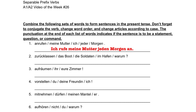In the next one, we have a question starting with Warum — why. We have the separable prefix verb zurücklassen, so we put lassen where we would normally conjugate the verb, and then zurück at the end of the sentence. Using die Soldaten as the subject and the boat as the thing being left behind: Warum lassen die Soldaten das Boot im Hafen zurück? — Why are the soldiers leaving the boat behind in the harbor?